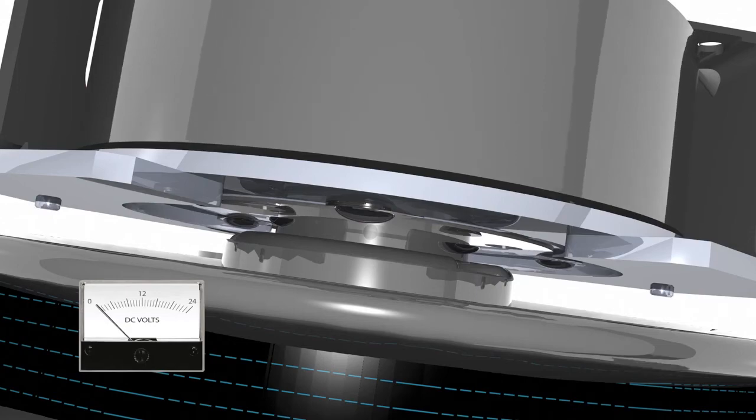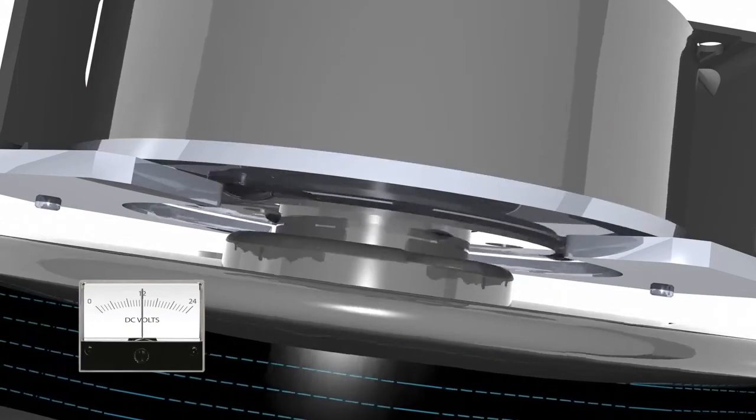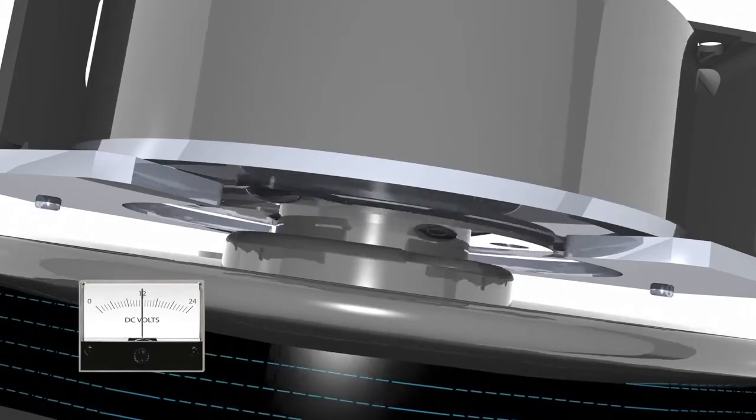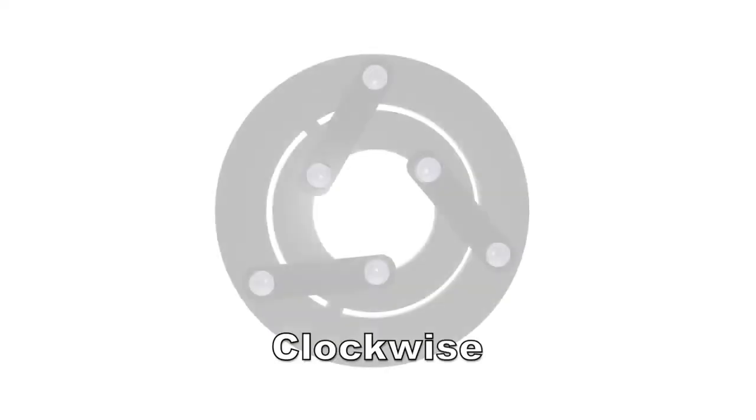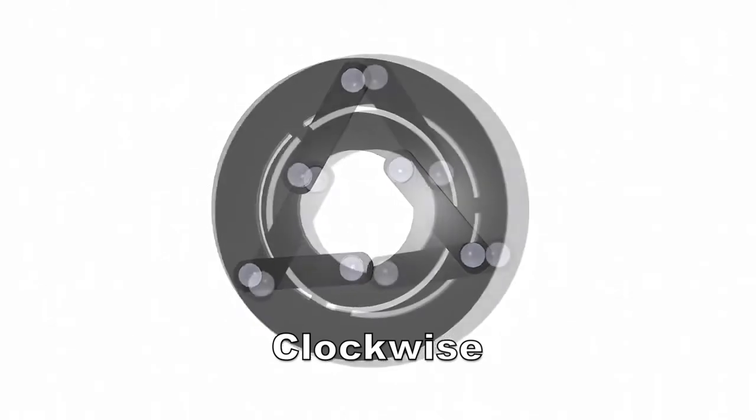The torque is transmitted from the armature through the leaf springs into the pulley. The springs need to run in tension, not compression. So clutches are either built to run clockwise or counter-clockwise.